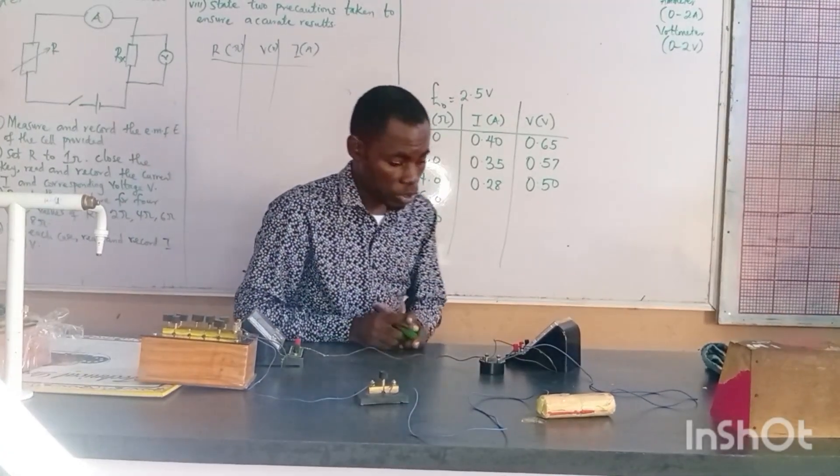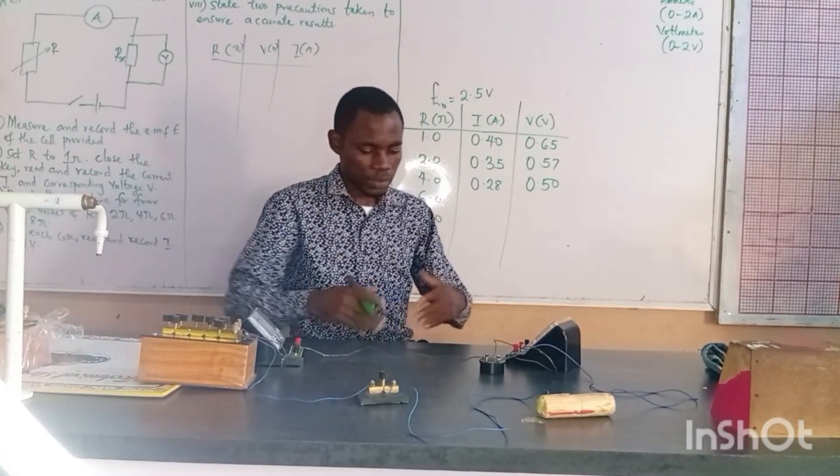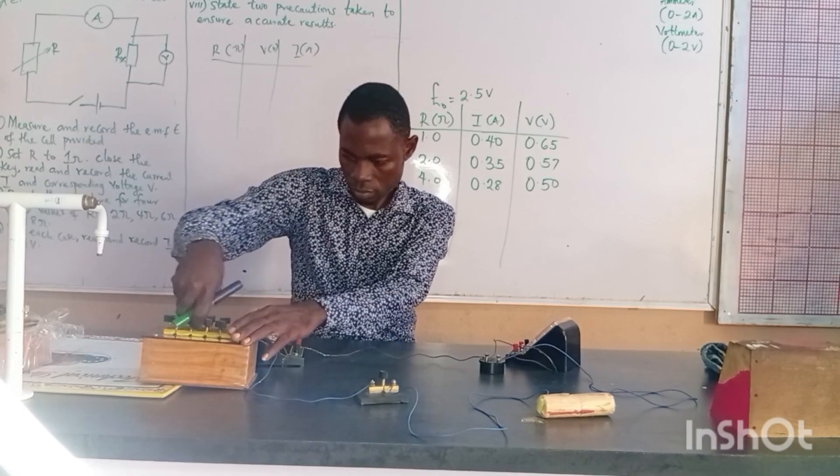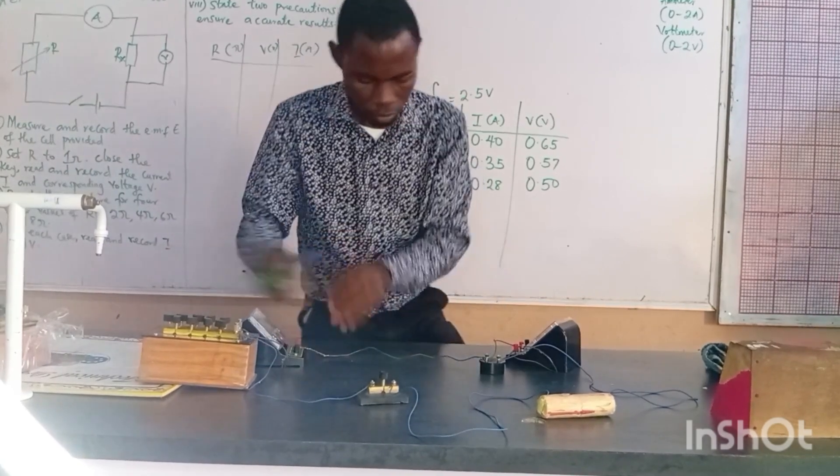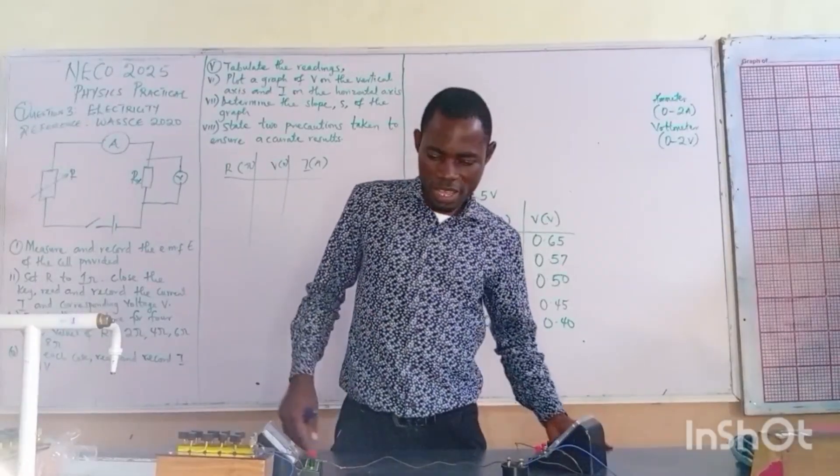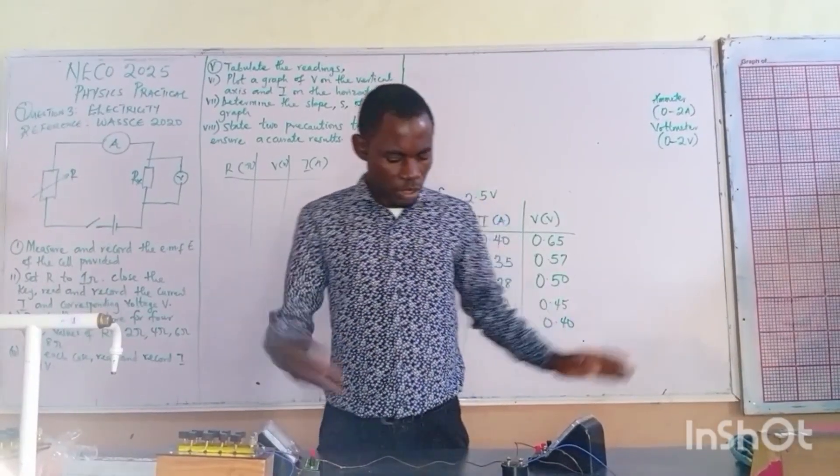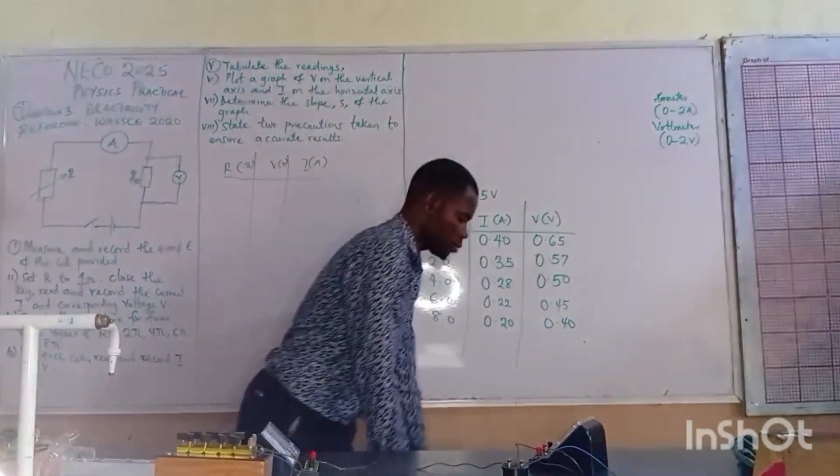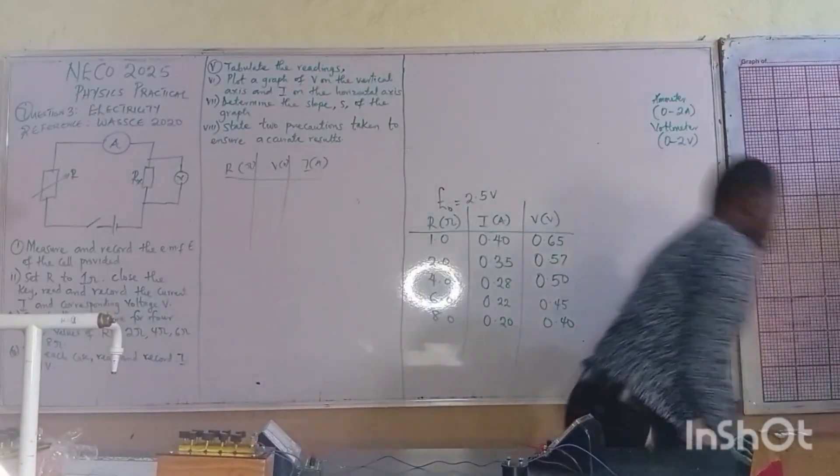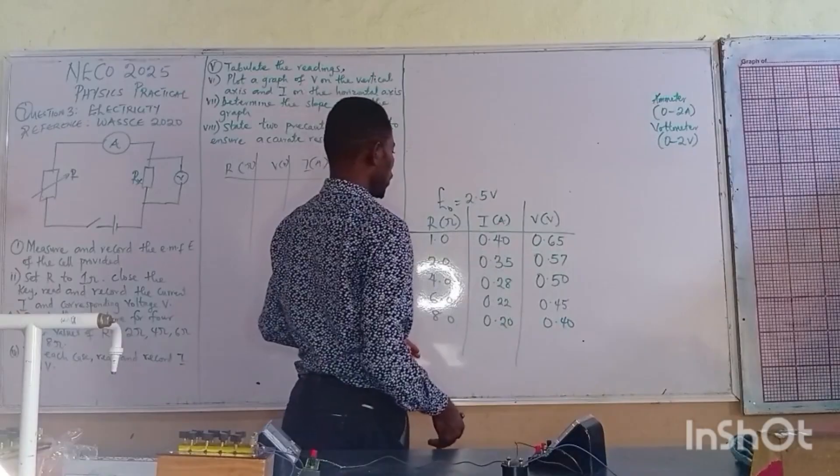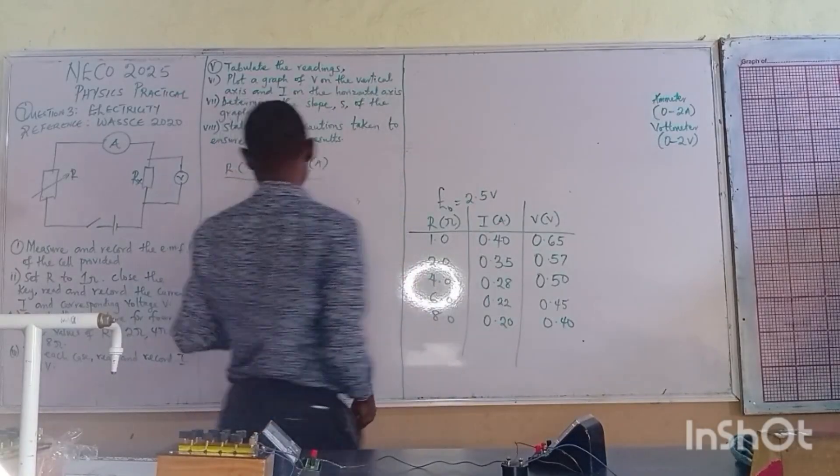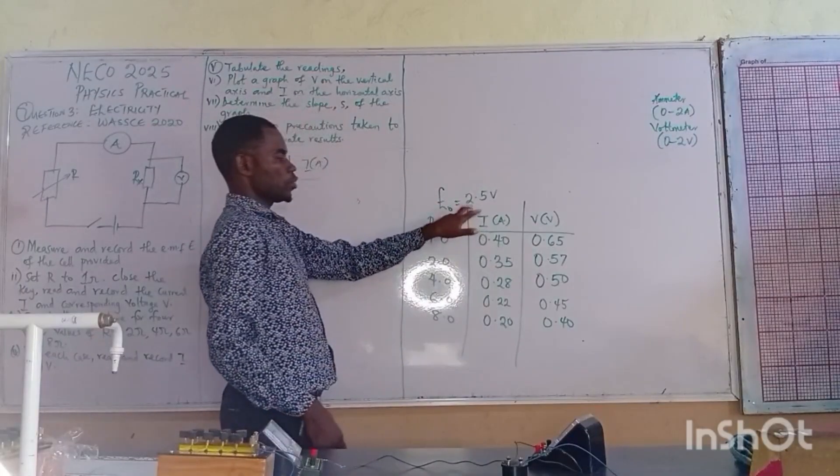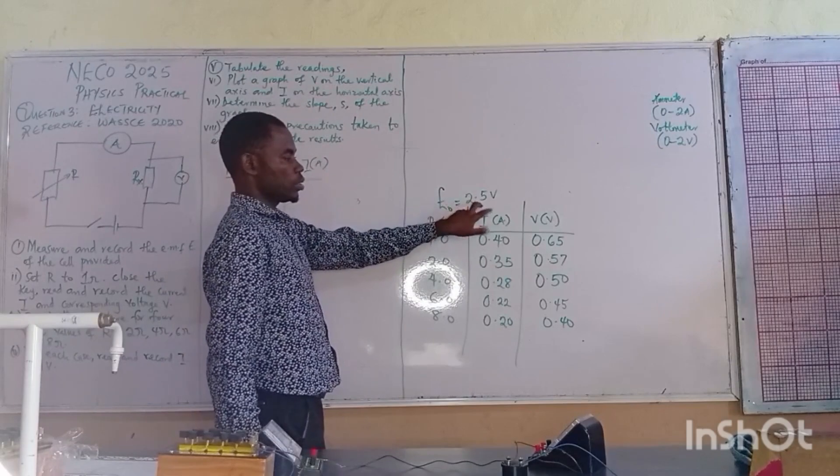I have done the first three, so let me clear and do the others and move to the next thing. Now I have finished the recording notes and the recordings. I have tabulated my readings. My E-naught was 2.5.